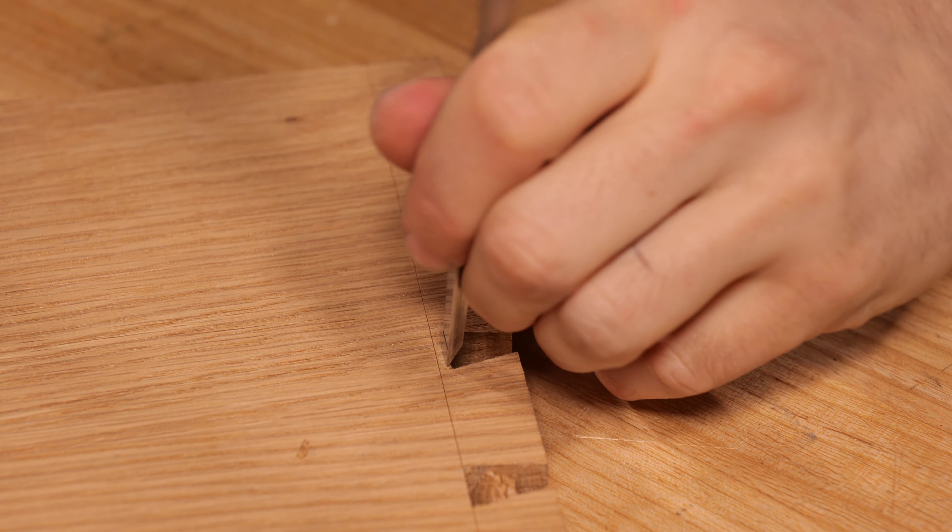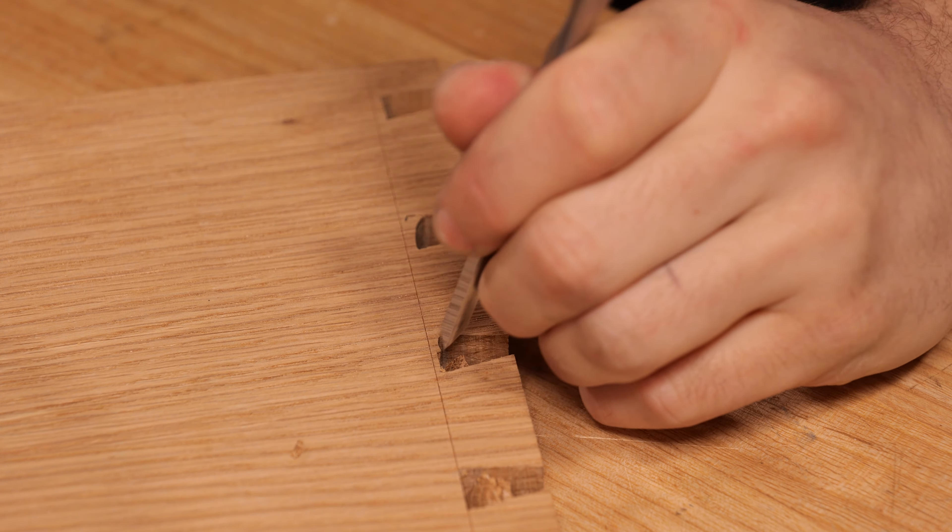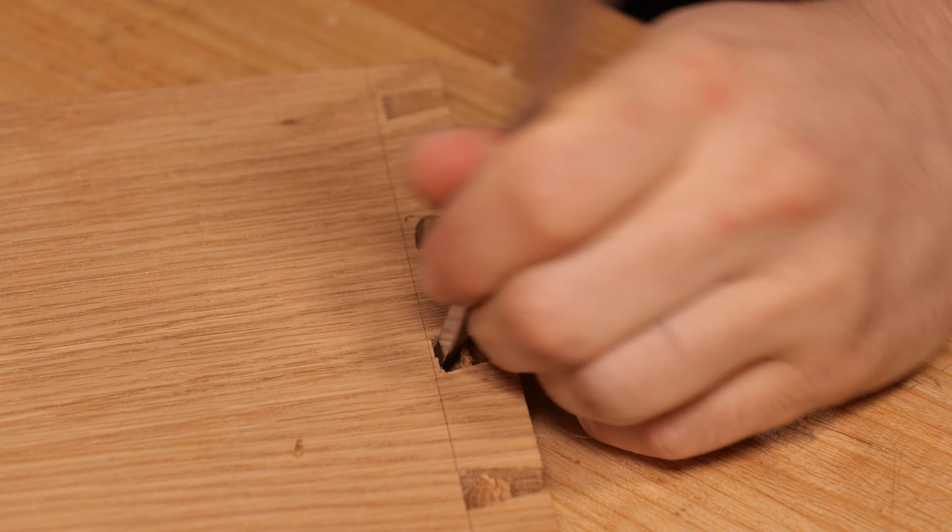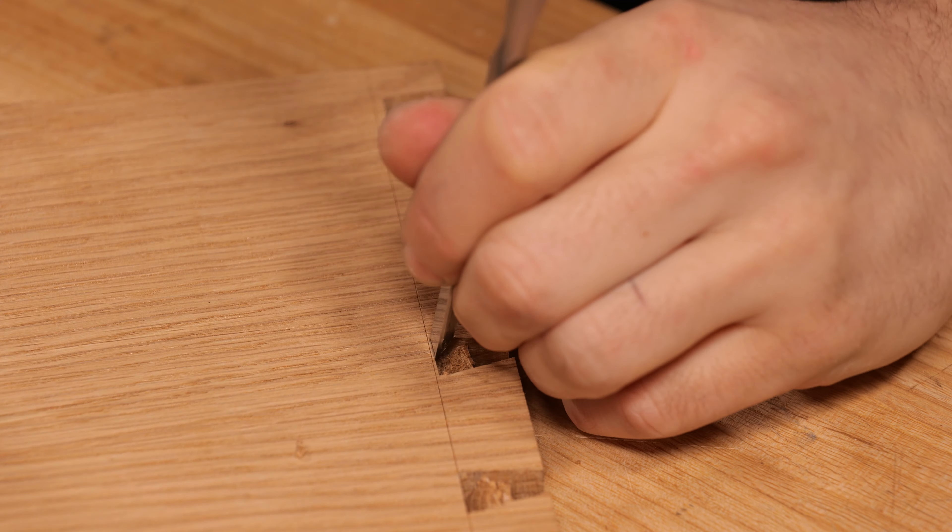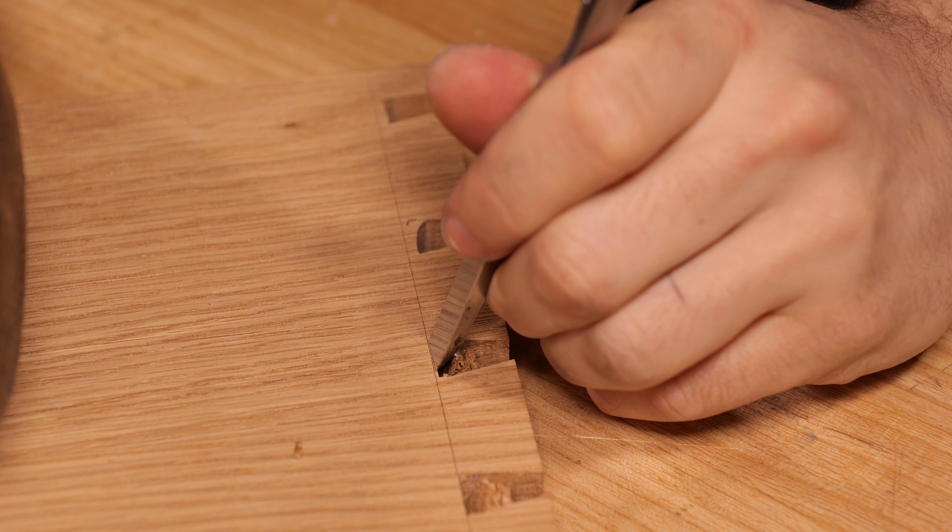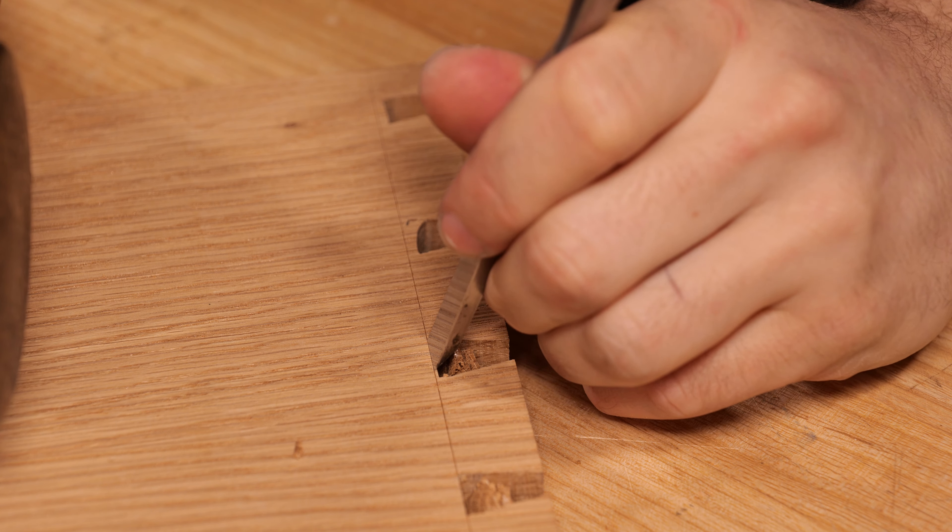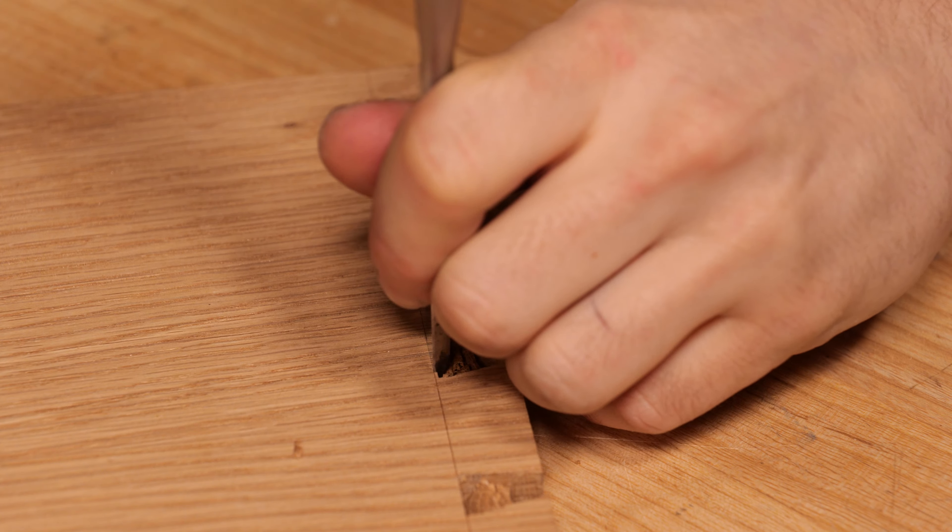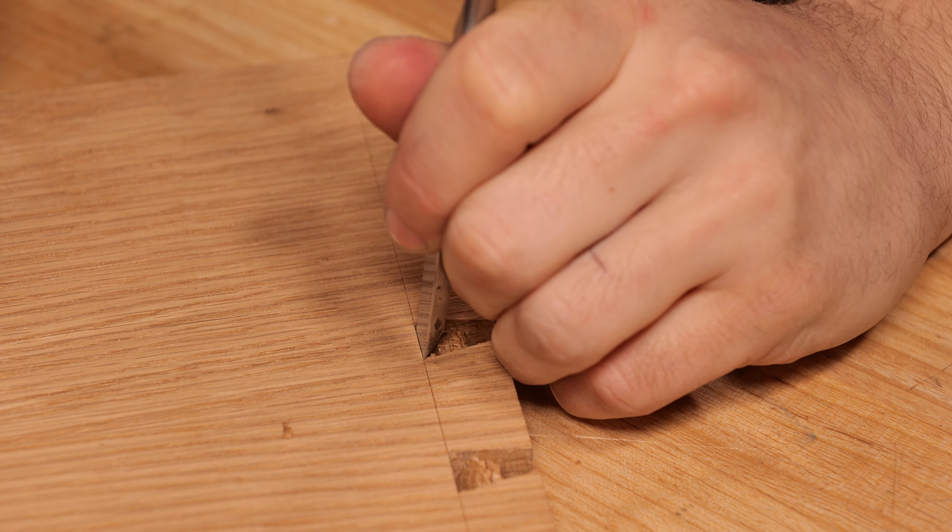So a little bit closer up this time: narrow chisel removing half the waste and only going down halfway, keep removing half of it, a bit closer, and then for that final chop, chisel goes into the line, right into the corners, and down to halfway.